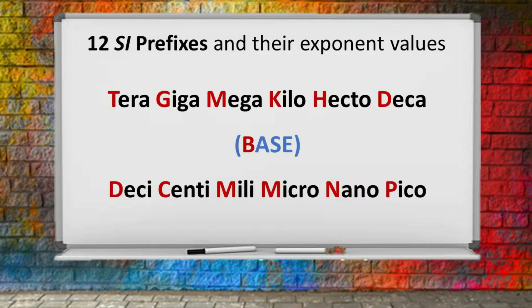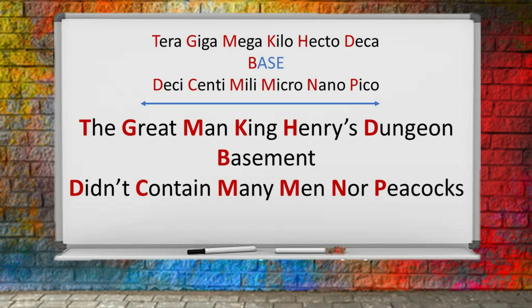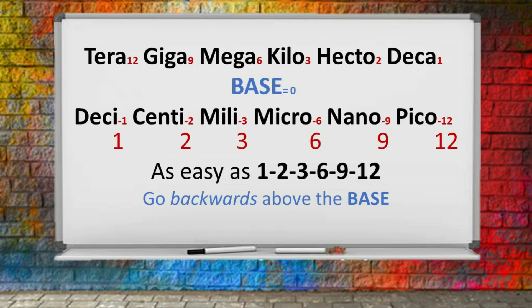Instead of six, let's take a look at 12 SI prefixes: tera, giga, mega, kilo, hecto, deca, then a base, and going downwards: deci, centi, milli, micro, nano, pico. So how are you going to remember them along with their exponents? We're going to go back to our buddy King Henry: "The great man, King Henry's dungeon basement, didn't contain many men nor peacocks." And to remember their exponential values, it's as easy as 1, 2, 3, 6, 9, 12.